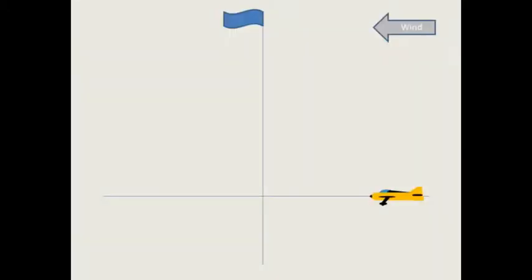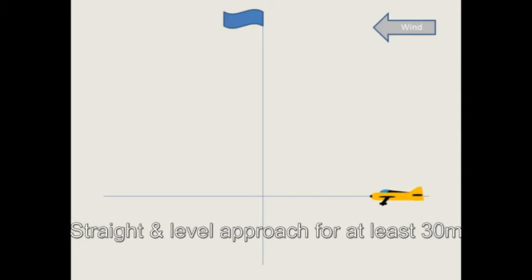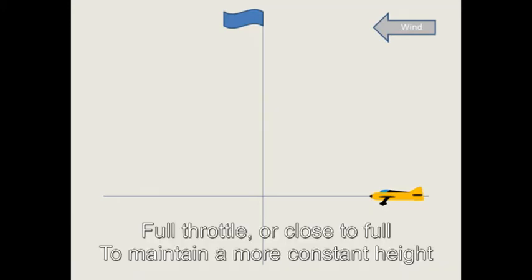Let's step through the manoeuvre. As always, there should be an approach that is straight and level for at least 30 metres. You should normally be at full throttle, or close to full. The model will maintain a more constant height this way.